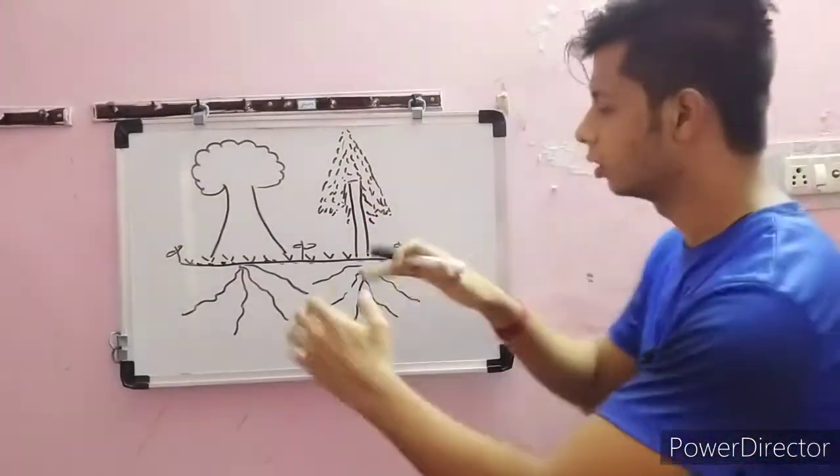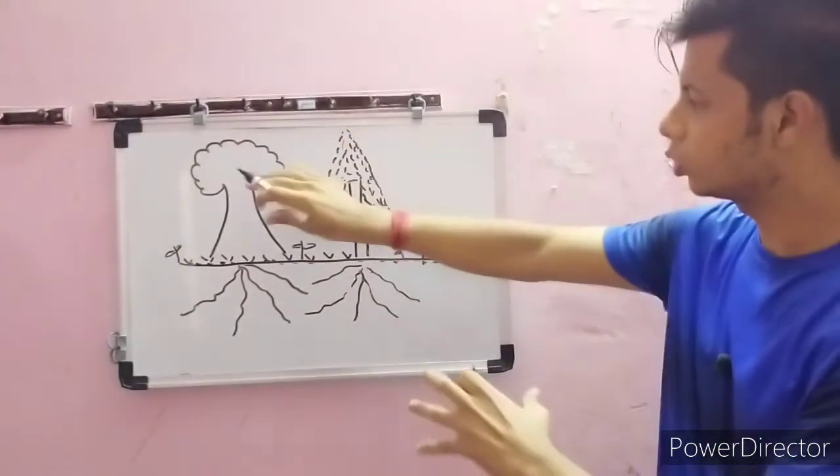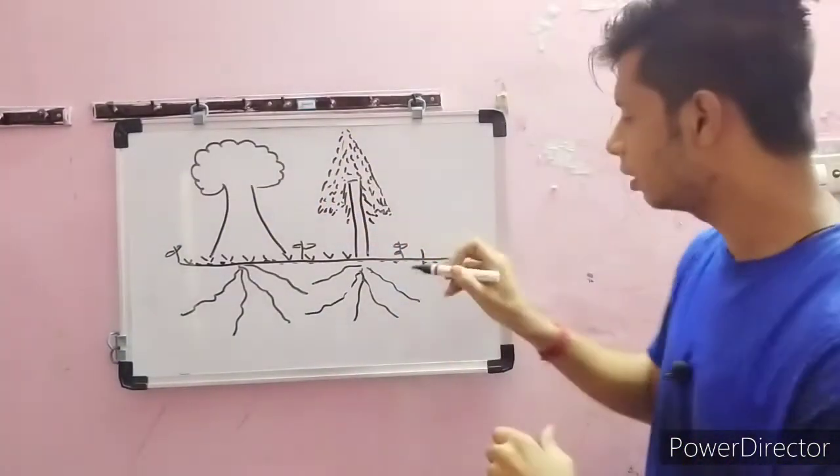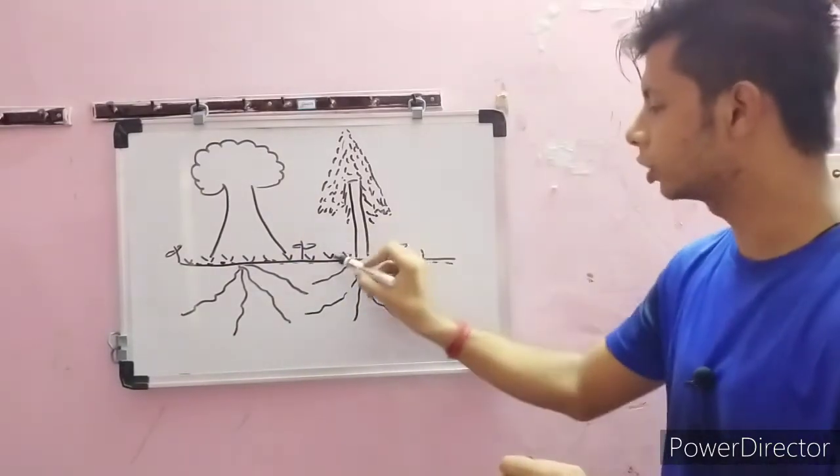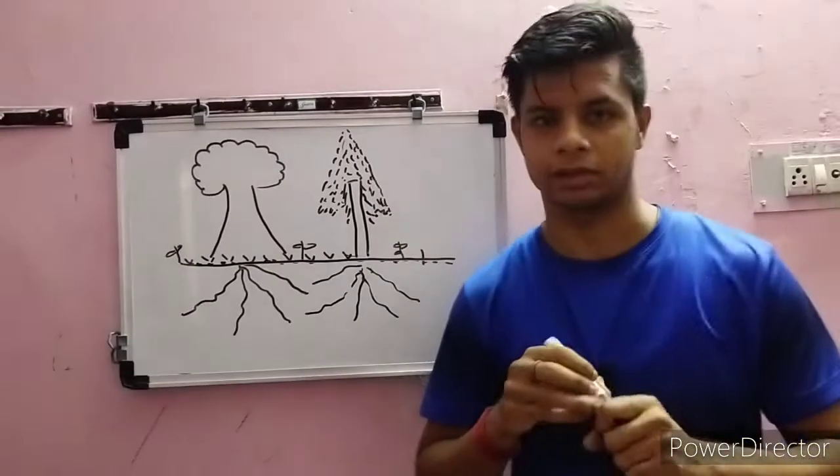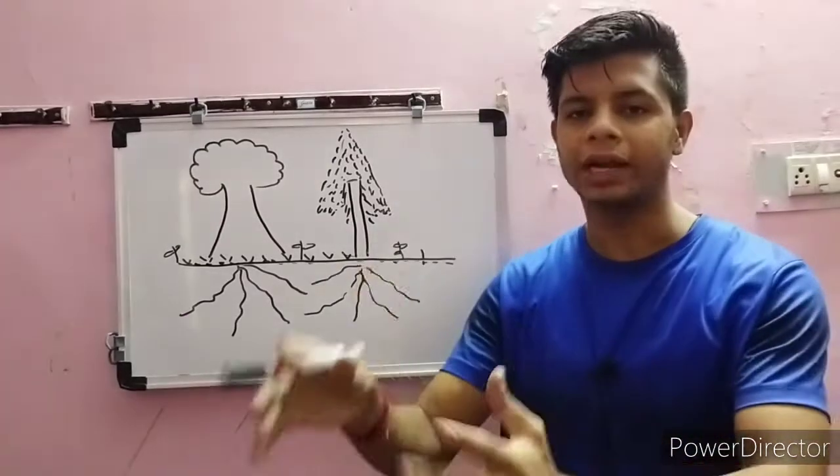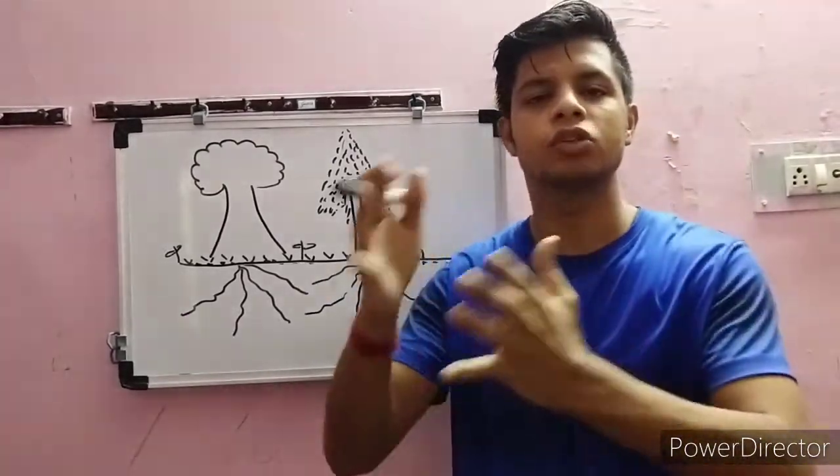Before going to the fuel, let me show you a diagram to understand everything. As you know, there are two different types of trees, this is the land, these are the roots of the trees, these are small shrubs, and these are grasses. When we talk about wildland fuels, they are mainly categorized into four main types.